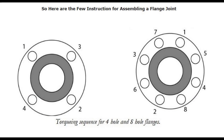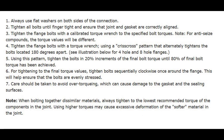Here are the instructions for assembling a flange joint. Number 1: Always use flat washers on both sides of the connection. Number 2: Tighten all bolts until finger tight and ensure that the joint and gasket are correctly aligned. Number 3: Tighten the flange bolts with a calibrated torque wrench to the specified bolt torques. Note: for anti-seize compounds, the torque values will be different.